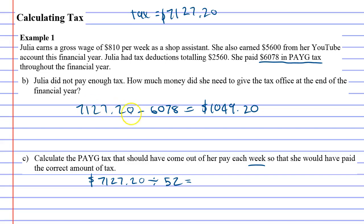That comes to $137.06 per week. That's what should have been taken out each week so that at the end of the year she didn't owe any more money to the tax office.